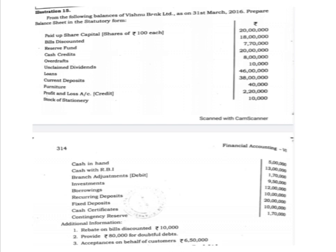Current deposits: 38 lakh. Furniture: 40,000. Profit and loss account credit balance: 2 lakh 20,000. Stock of stationery: 10,000. Cash in hand: 5 lakh. Cash with RBI: 13 lakh. Branch adjustments which shows a debit balance: 1 lakh 70,000. Investments: 9 lakh 50,000. Borrowings: 12 lakh. Recurring deposits: 10 lakh. Fixed deposits: 20 lakh. Cash certificates: 10 lakh.